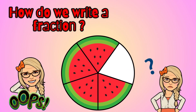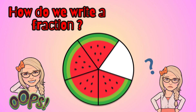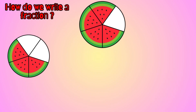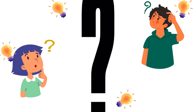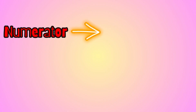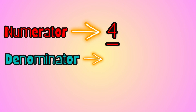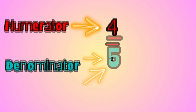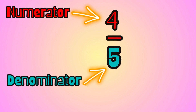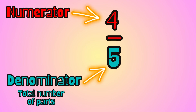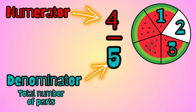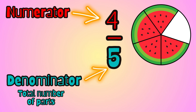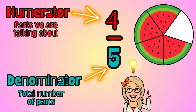But how do we write a fraction? Let's remember that the numerator is the number that goes on the top, and the denominator is the number that goes on the bottom. The denominator tells me how many parts we have in all — how many parts we have in the whole. And the numerator tells me how many parts we are talking about.